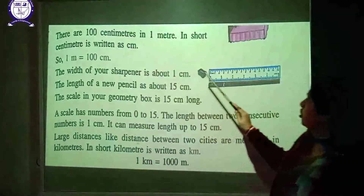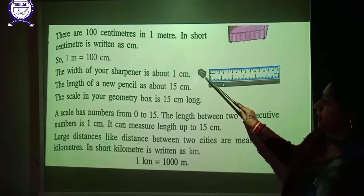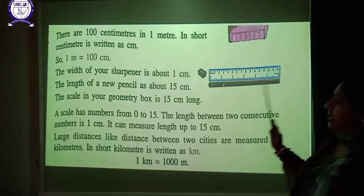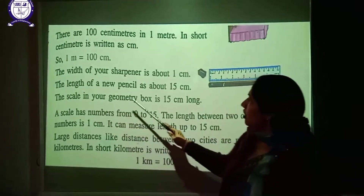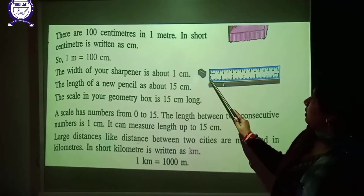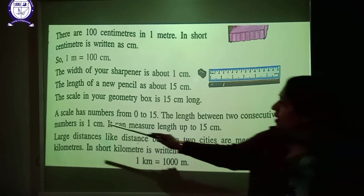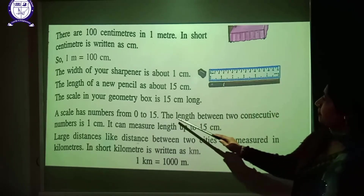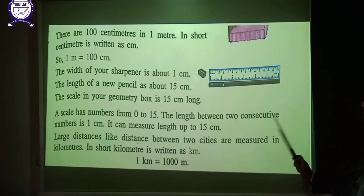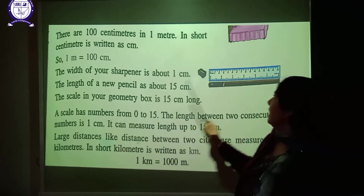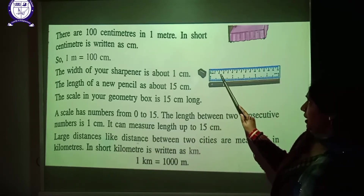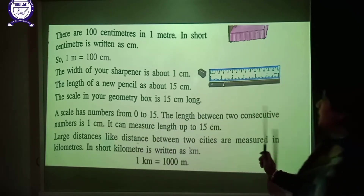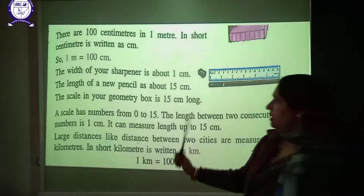The width of your sharpened pencil tip is about 1 centimeter. The length of a new pencil is 15 centimeters. The scale in your geometry box is 15 centimeters long, with numbers from 0 to 15. The length between two consecutive numbers on the scale is 1 centimeter.